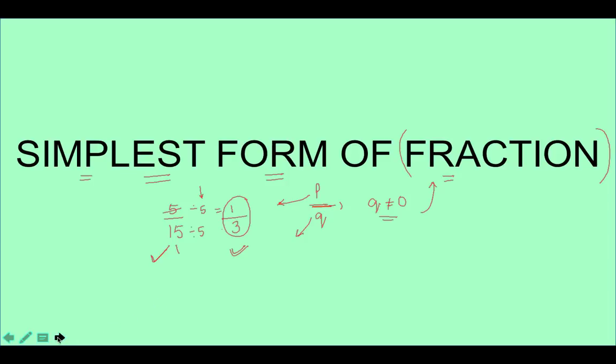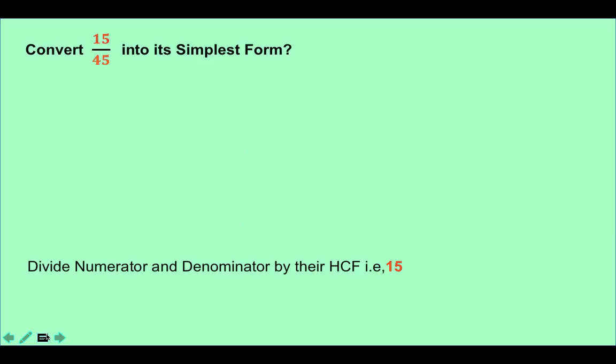Let us look at another problem. Convert 15 upon 45 into its simplest form. In order to convert this into its simplest form, we will need to divide both the numerator and the denominator by their HCF or highest common factor.